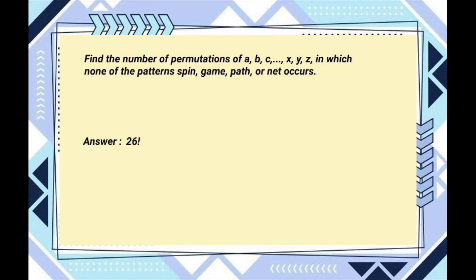Next, we need to count the number of permutations that contain at least one of the forbidden patterns — spin, gain, path, or net. To do this, we can use the principle of inclusion-exclusion.